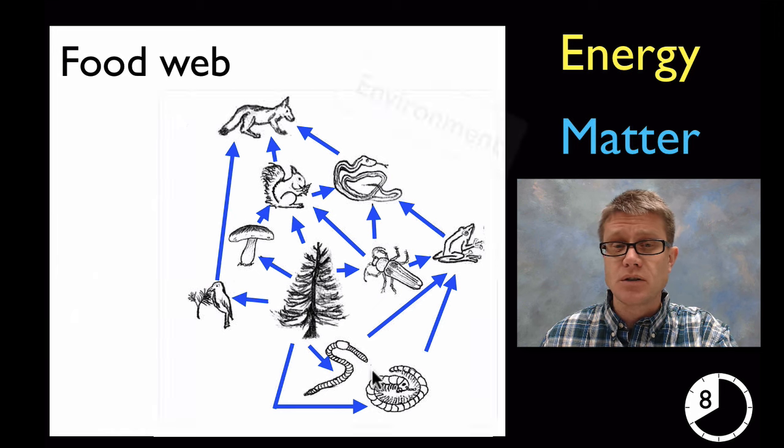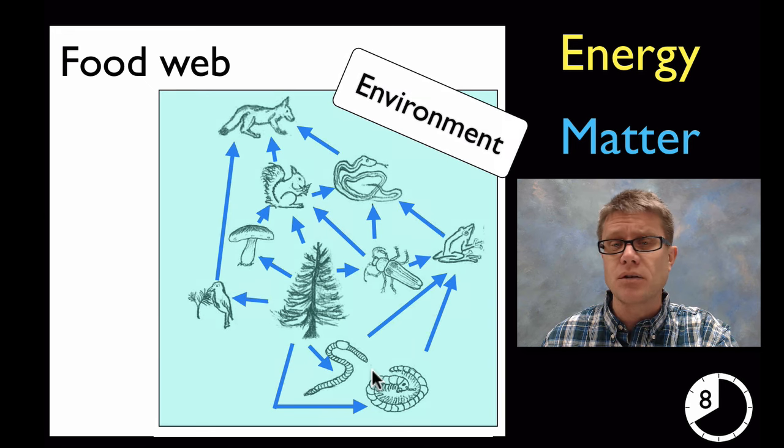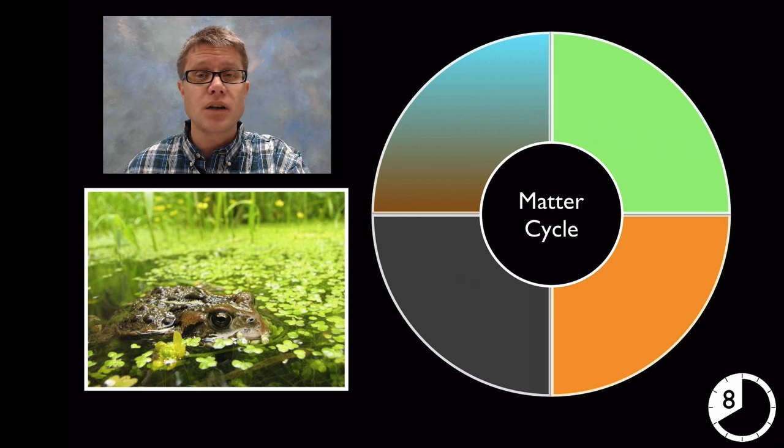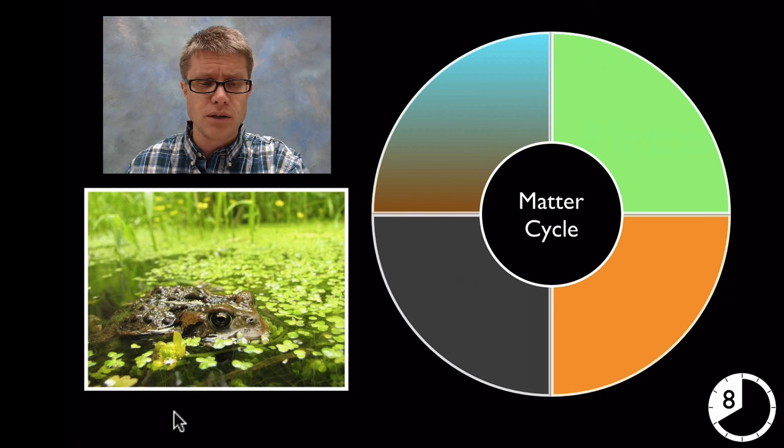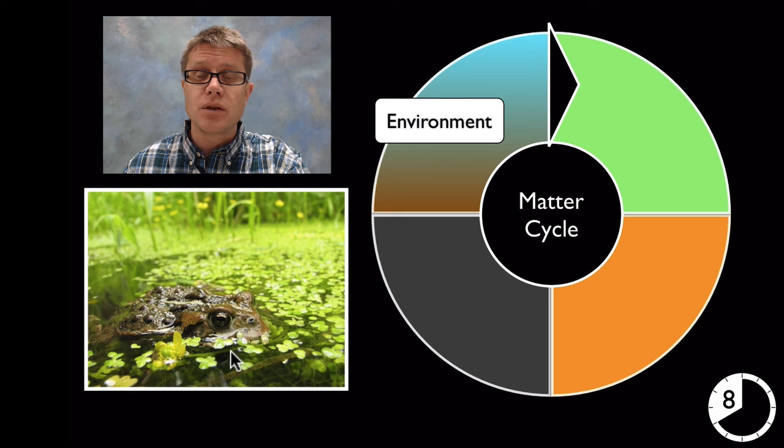The problem with the food web is it doesn't show you one thing. It doesn't really show you the environment and where matter is coming from. And so a good thing to look at would be a matter cycle. So we're looking at where the cycle actually flows. And so this picture right here, where is the matter found? Where is it going? And then how is it being returned back to the environment?